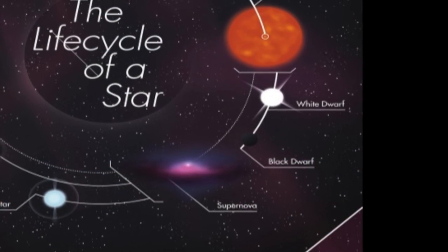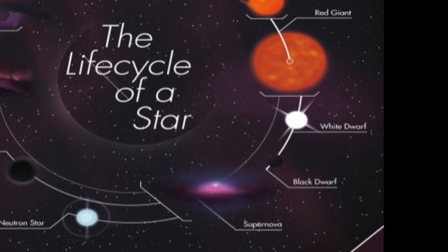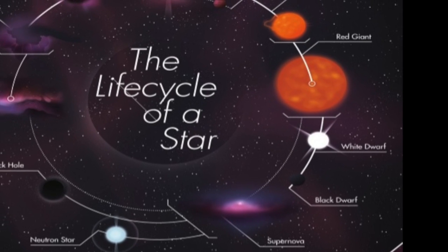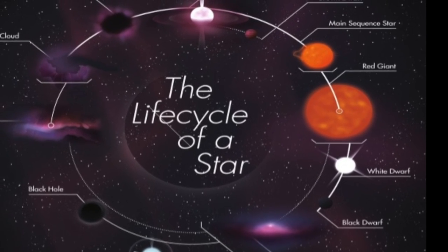A black hole forms when a huge star doesn't have enough fuel and it cannot maintain its temperature. Because this lowers the pressure pushing out from the inside, the star implodes and collapses on itself. This is called gravitational collapse.